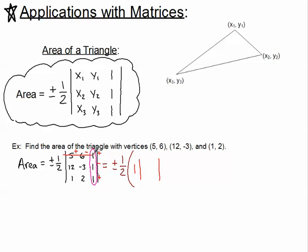That is found by crossing out the row with that 1 and the column with that 1, leaving the 12, the negative 3, the 1, and the 2. So I've got 12, negative 3, 1, and 2.